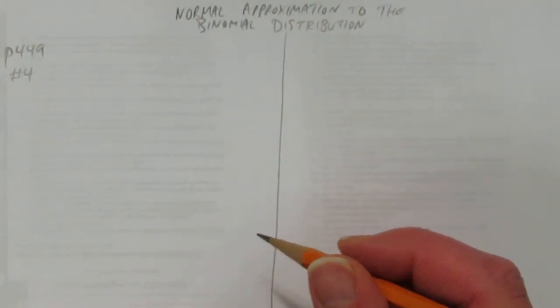In this video, we'll look at the normal approximation to the binomial distribution. So this question says salespeople sometimes advertise their products by telephoning strangers. Only about 1.5% of these cold calls result in a sale.